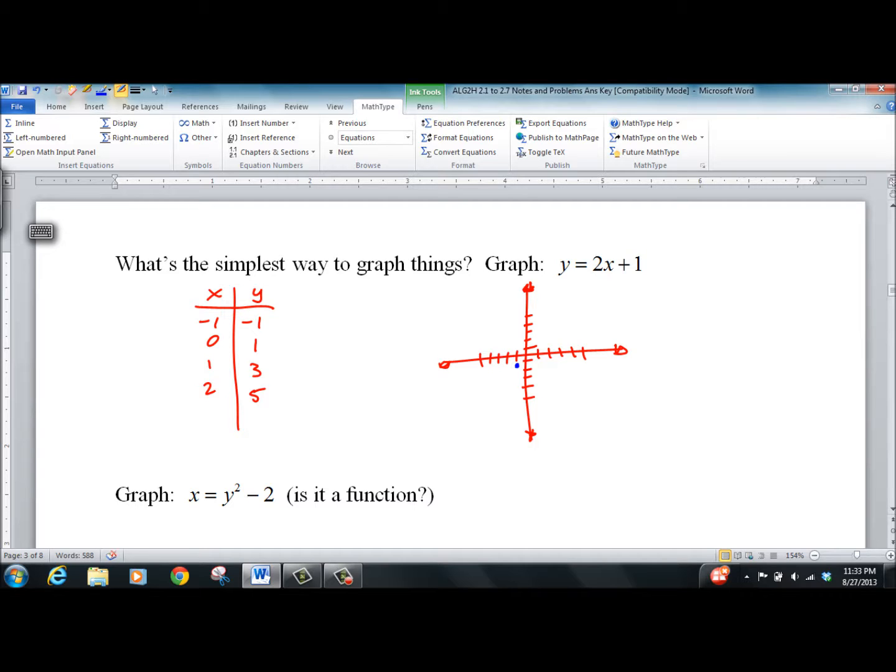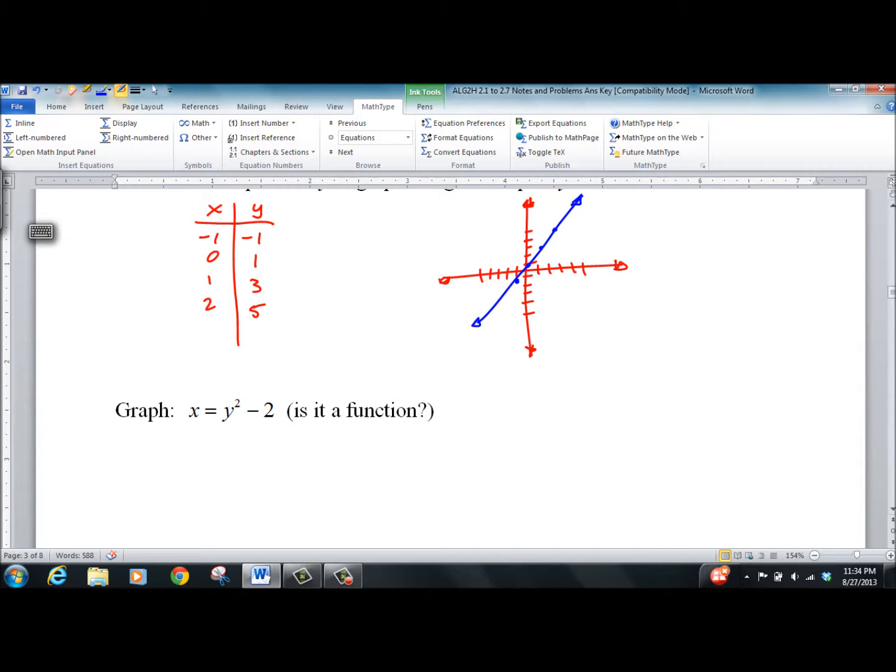Negative 1, 1. 0, 1. 1, 3. And 2, 5. There's our points. Let's connect the dots, and there's our graph. Is it a function? Yes. Because vertical line test tells us it is.